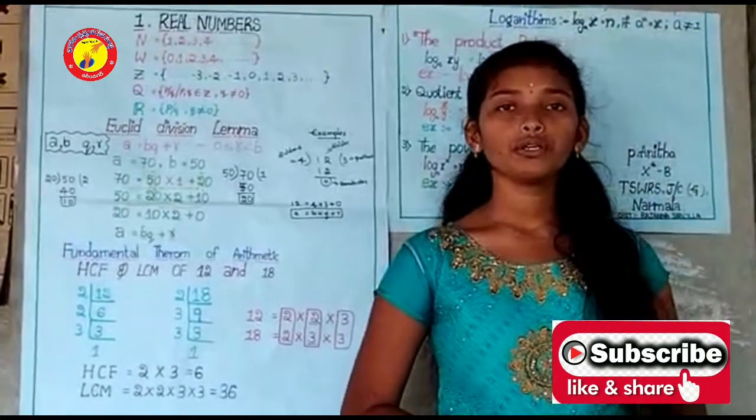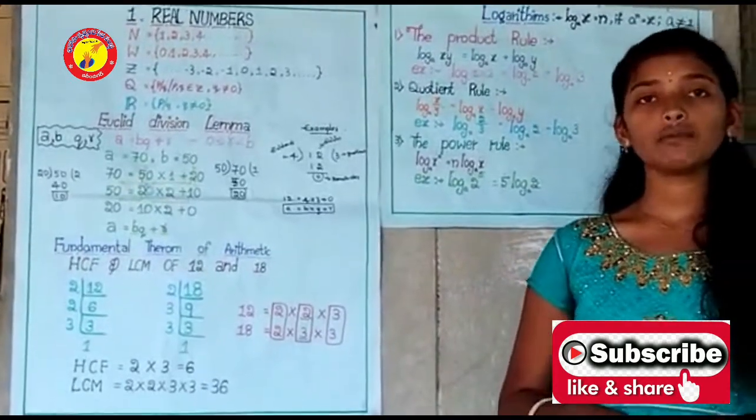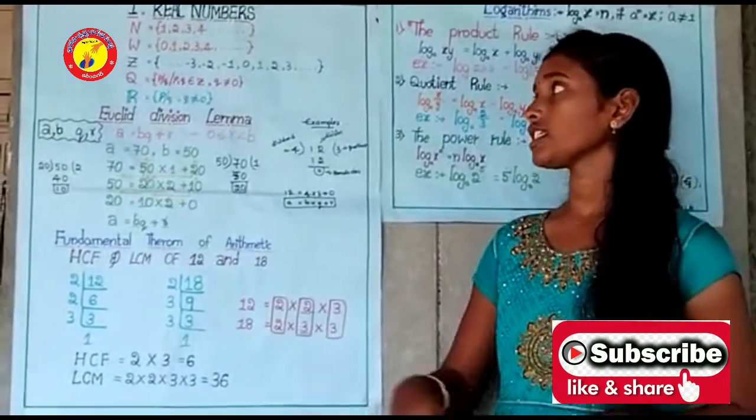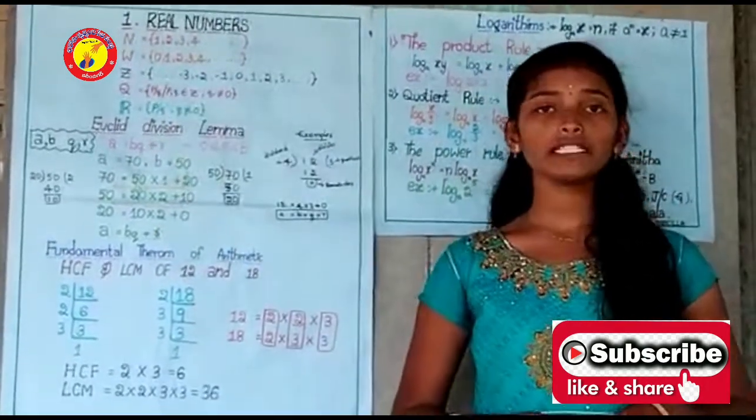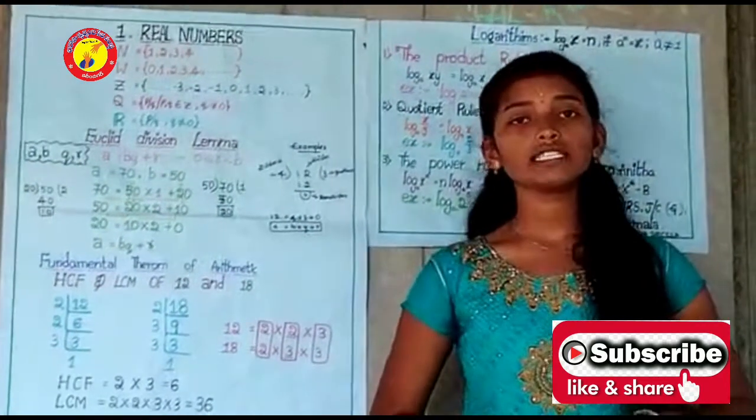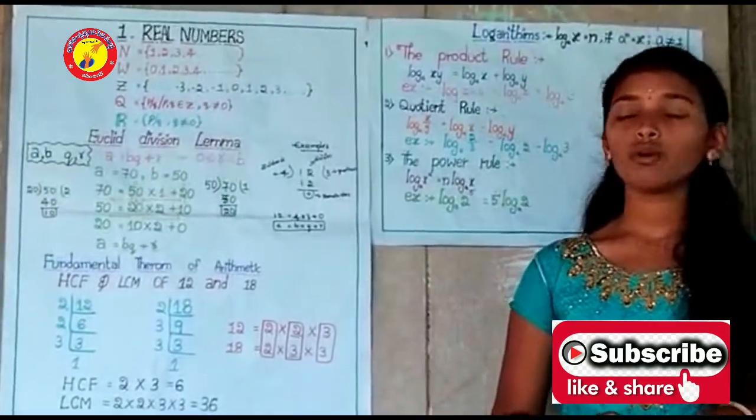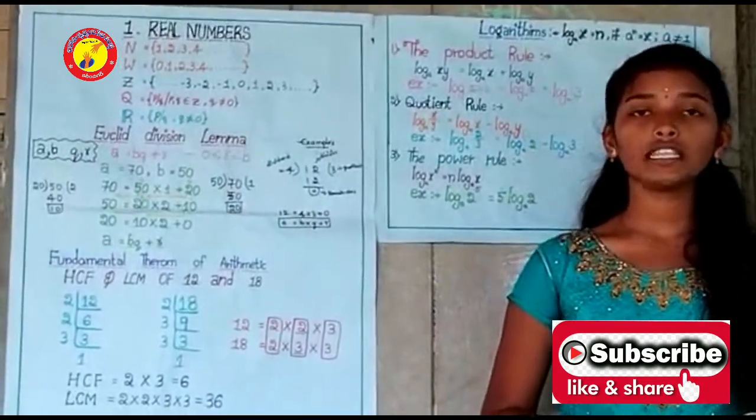Before starting with real numbers, let me discuss different types of numbers. Natural numbers means all countable numbers. Whole numbers means all countable numbers including zero. Integers means negative numbers including whole numbers.